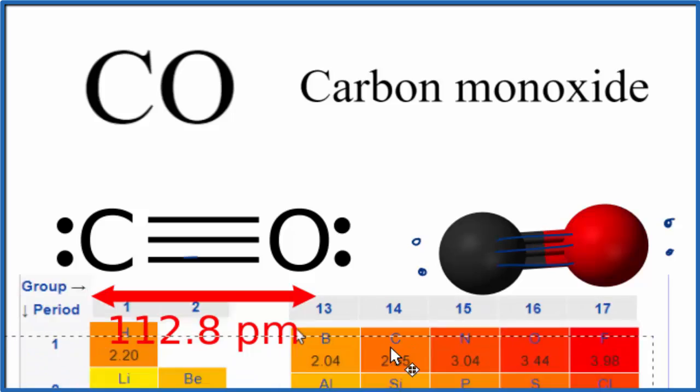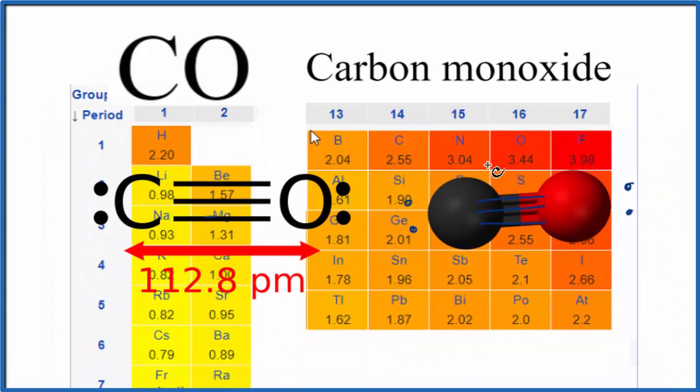Let's look at the periodic table with electronegativity values. So here is carbon, 2.55, and then oxygen, 3.44.